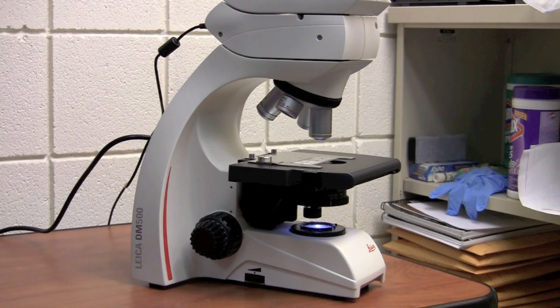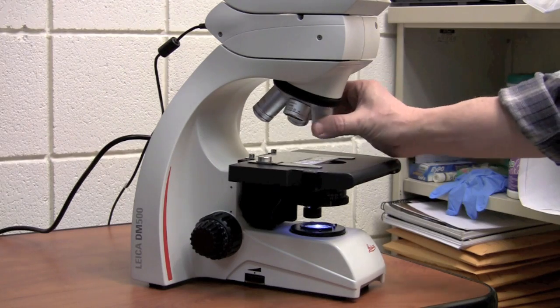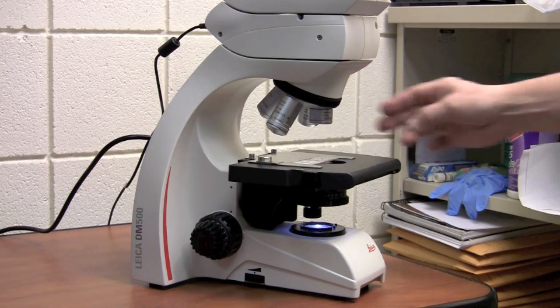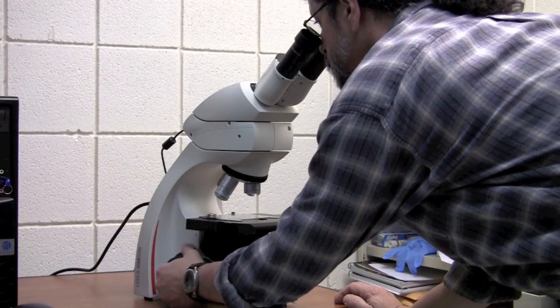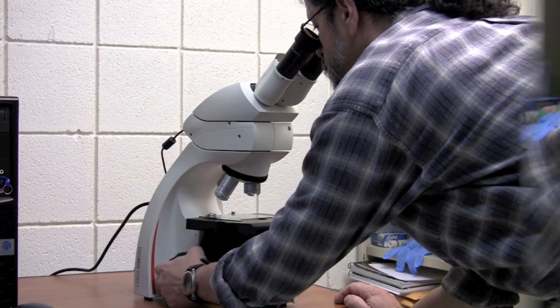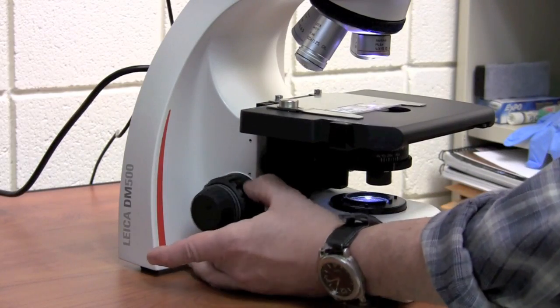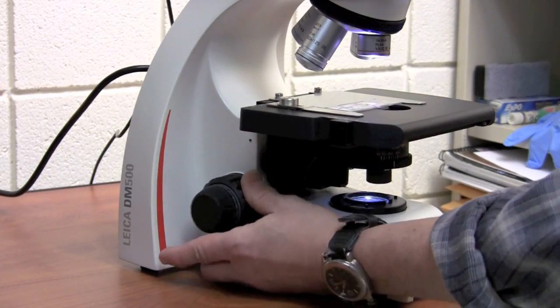Turn the revolving nose piece so the shortest objective lens is clicked in place. Look through the ocular lenses. Move the stage up using the course adjustment knob.